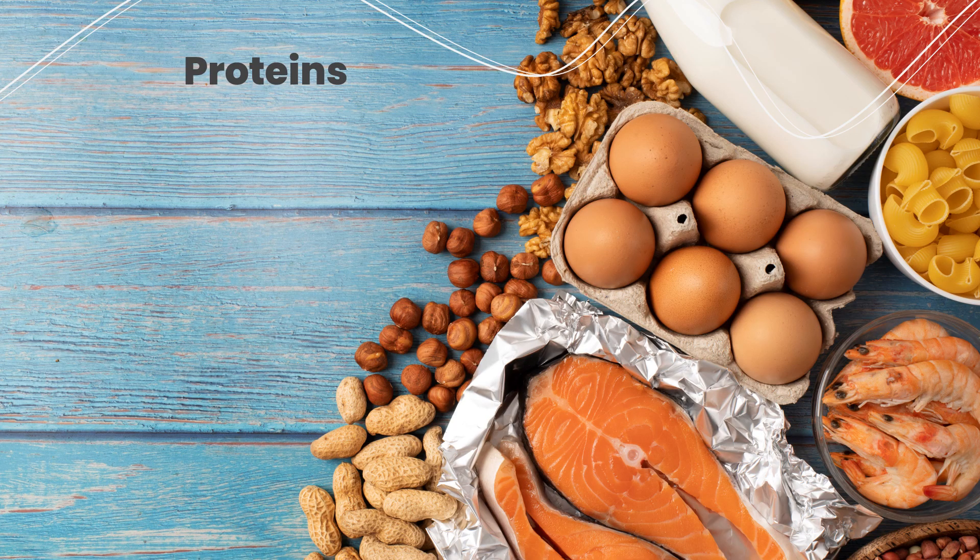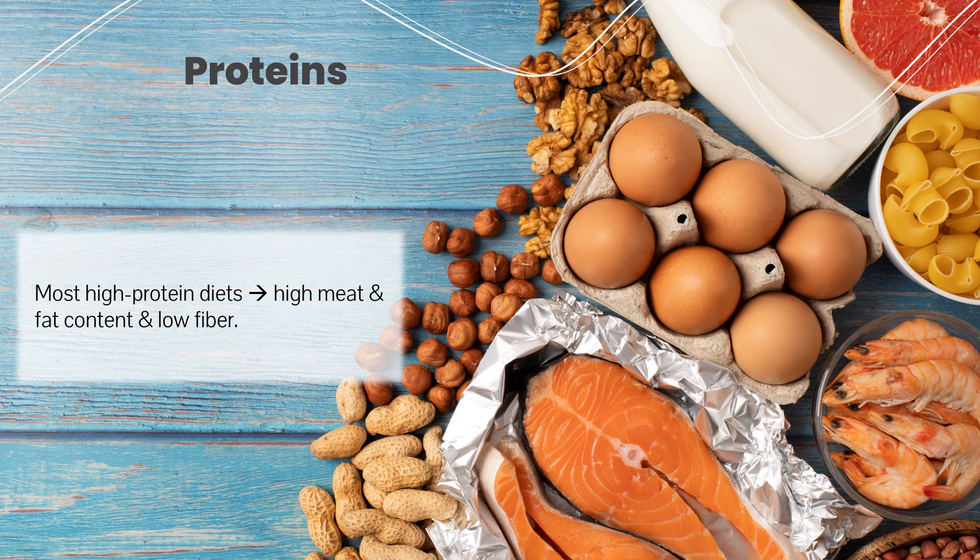Moving on to survey the potential effect on carcinogenesis of proteins. Most high-protein diets have a high meat content, high fat content, and low fiber. It's very similar to what we talked about with fats — it's hard to isolate the effect of one macronutrient over another because of the dietary patterns that come with our food choices. Diets high in protein that are not plant-based or vegan are usually high in meat and accordingly high in fat content, and low in fiber unless people consciously include fruits, vegetables, and other fiber sources.